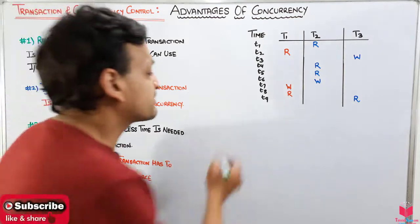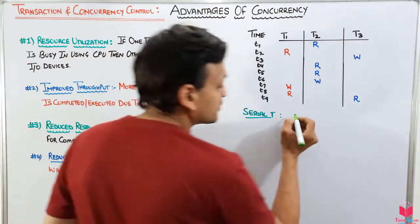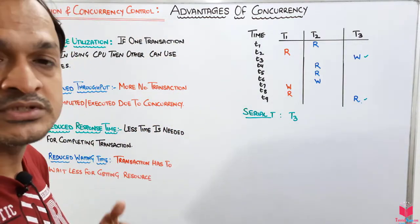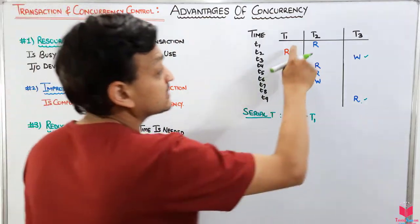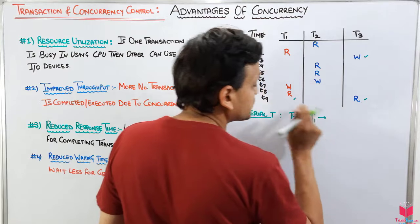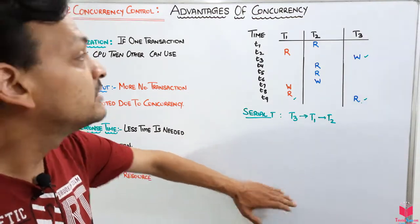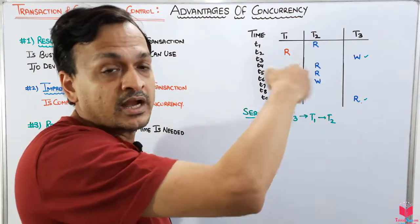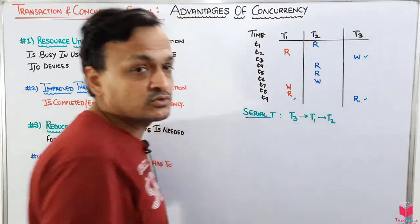In a serial approach, if we want to execute transactions serially, we execute T3 first — all its operations one after another. Only when T3 is fully done do we allow resources to the next transaction, say T1, and only after T1 finishes does T2 come. That is the serial way. But in concurrency, we switch the CPU from one transaction to another, whereas in serial execution we run all instructions of one transaction before providing resources to the next.